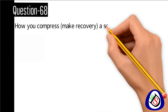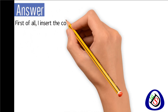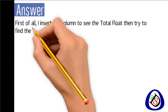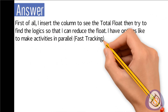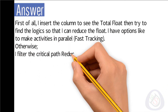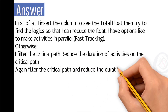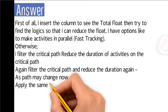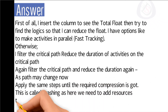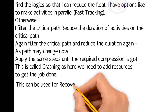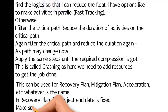Question number 68: How do you compress or make a recovery schedule in Primavera P6? Answer: First, I insert a column to see the total float and find the logic to reduce it. I can make activities parallel through fast tracking. I also filter the critical path, reduce durations of critical activities, then re-filter as the path may change, and repeat until the required compression is achieved. This is crashing — adding resources to get the job done. This can be used for a recovery plan, mitigation plan, or acceleration. In a recovery plan, the project end date is fixed. Always align your team before performing any procedure.